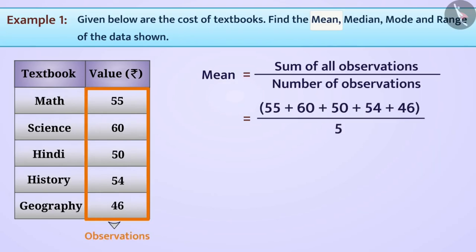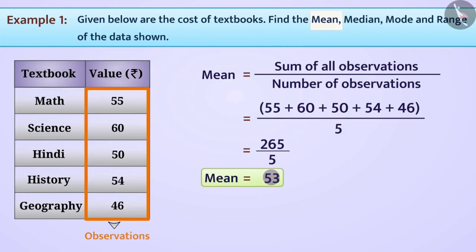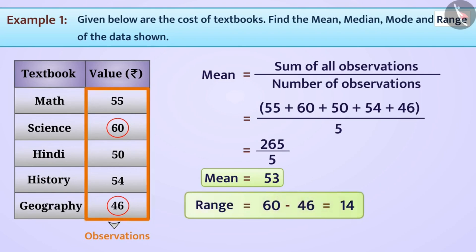Using this formula, we can derive the mean of the values given in the table. The answer is 53. Let us also try deriving the range of this data by subtracting the smallest observation, 46, from the largest observation, 60. The range comes out to be 14.